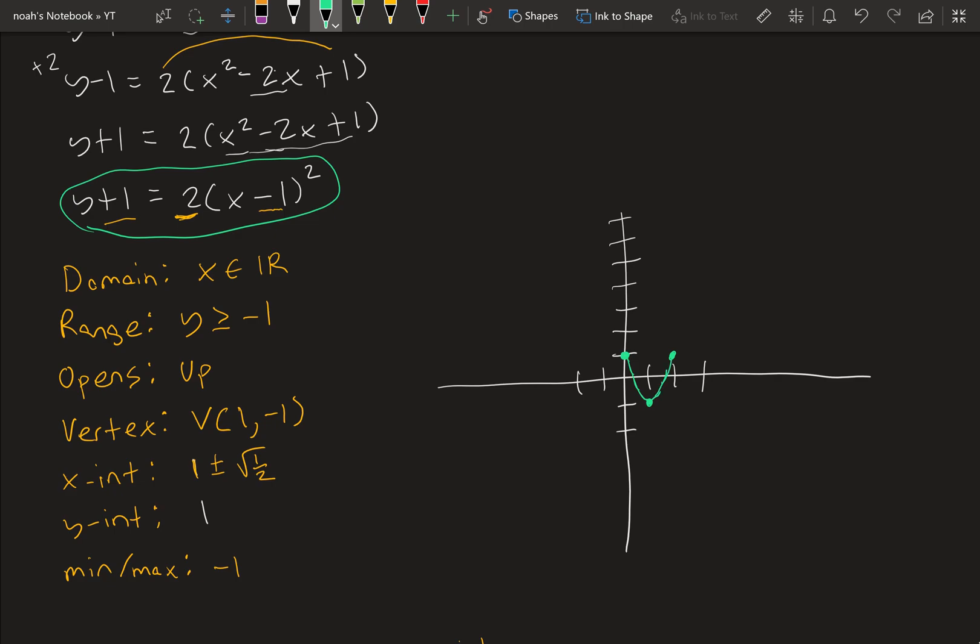Then if we plug in negative 1 into this equation right here, we get y plus 1 is equal to 2 times negative 2 squared, which is y plus 1 is equal to 8, y is equal to 7. So we know this